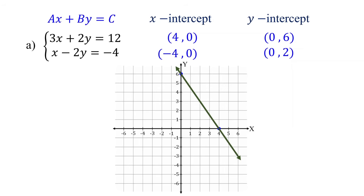For the second equation, plot (-4, 0), which is the x-intercept, and (0, 2), which is the y-intercept. Then connect them with a straight line. This is the line of the second equation. The intersection point of these two lines, which is (2, 3), is the solution to the system of equations.